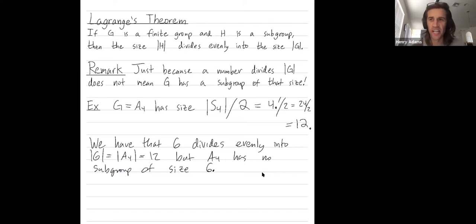So this is an example group. It has size 12. The alternating group on four elements has size 12. Six divides evenly into 12, but there's no subgroup of size six.